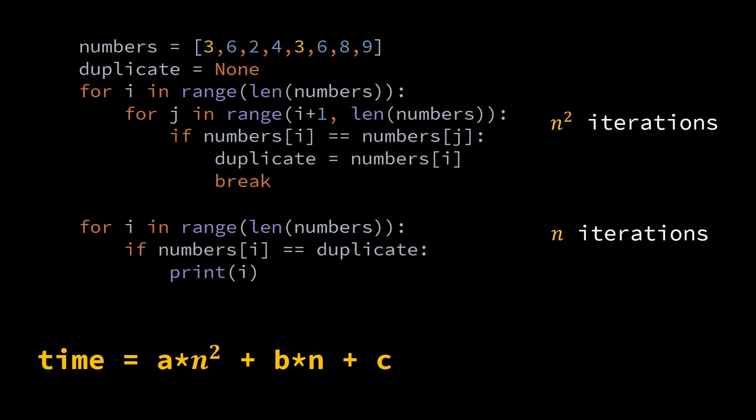But in this equation again apply those two rules: keep the fastest growing term which is a × n², drop b × n + c, and then also drop the constant which is a, and then you get order of n² complexity. So sometimes people say the complexity of this program is order of n² + n, but no, it is order of n², and I will explain you why you apply those two rules.